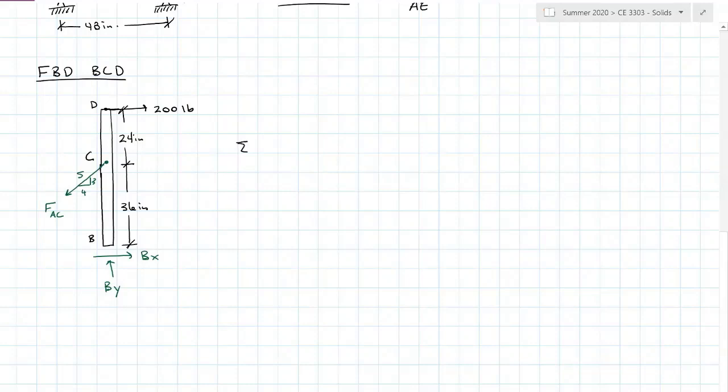If I sum moments about B, zero equals minus 200 times 60 inches away, plus the horizontal component four-fifths of force AC acting 36 inches away counterclockwise. Everything else passes through.